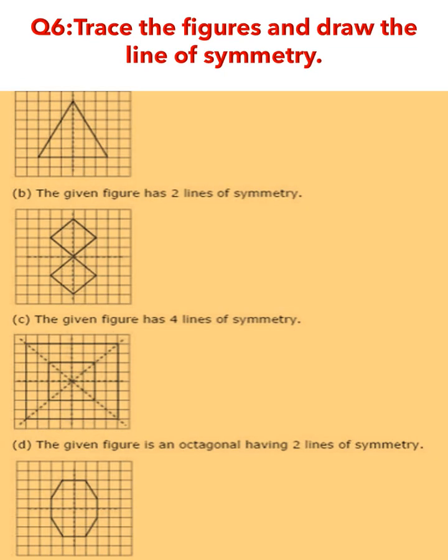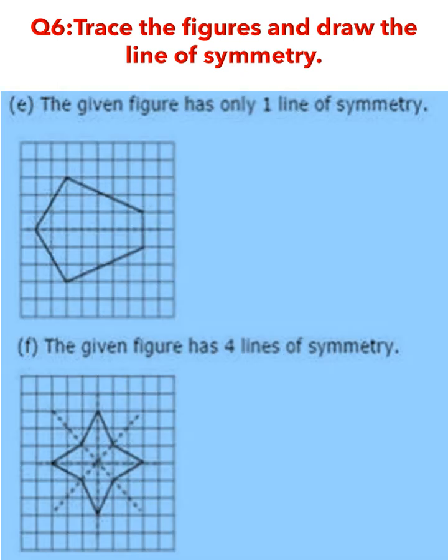In question number six, you have to trace the figures on graph paper and draw the line of symmetry. In part A, there was no line of symmetry. In part B, there are two lines of symmetry. In part C, there are four lines of symmetry. In part D, there are two lines of symmetry drawn here. In part E, it has one line of symmetry, and part F will have four lines of symmetry. You can pause the video and have a thorough look at the dotted lines, which will give you an idea of what the lines of symmetry are.